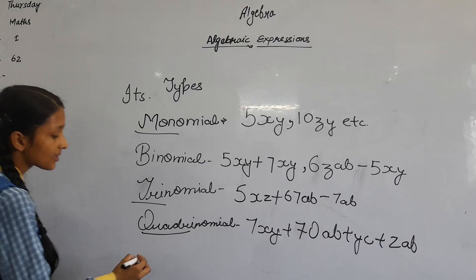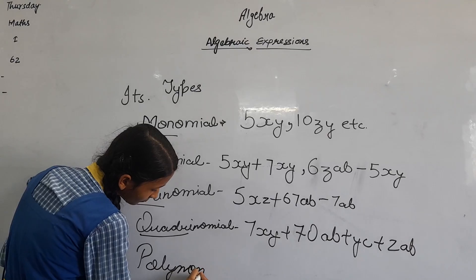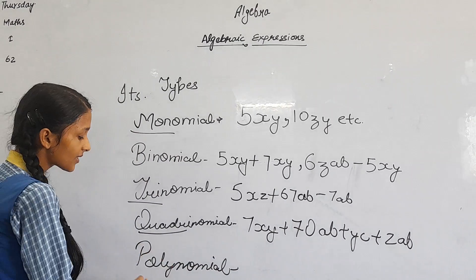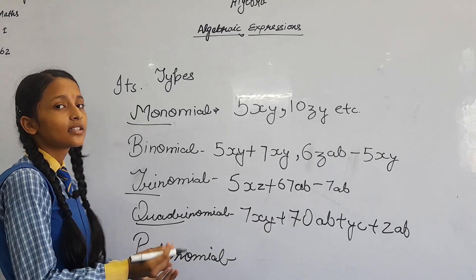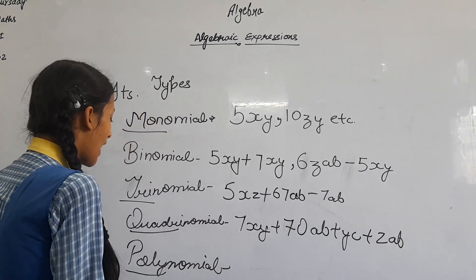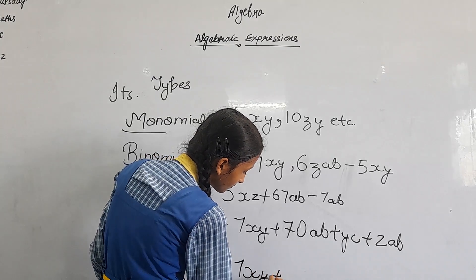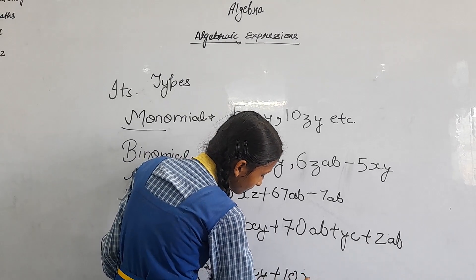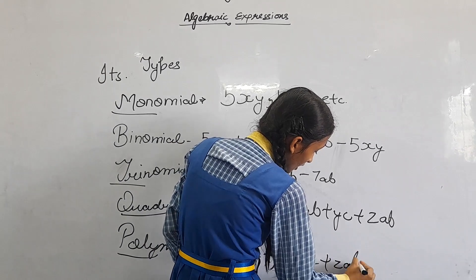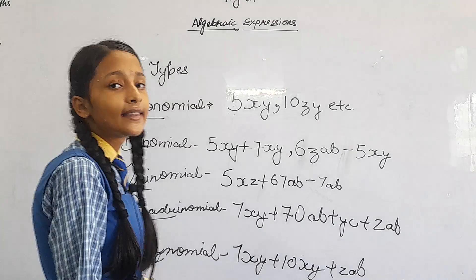The next type is polynomial. Poly means the algebraic expression which contains more than two terms is known as polynomial. Here we see there are more than two terms, so it is known as polynomial. That's all. Thank you.